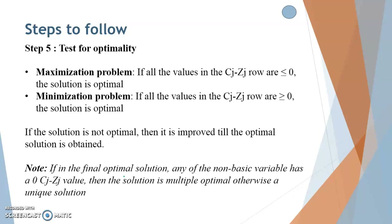In the case of a minimization problem, all the values in the Cj minus Zj row are greater than 0 if the solution is optimal. If the solution is not optimal, we have to improve it until we arrive at the optimal solution. Also note: in the final optimal solution, if any non-basic variable has a 0 in the Cj minus Zj value, then the solution is multiple optimal — meaning there is more than one solution; otherwise it is a unique solution.